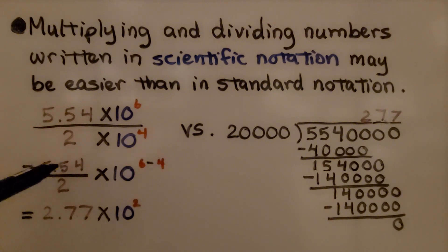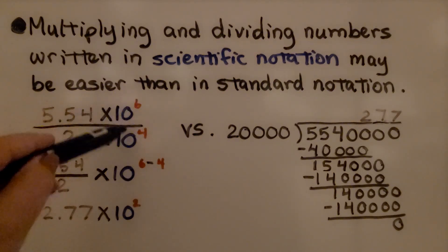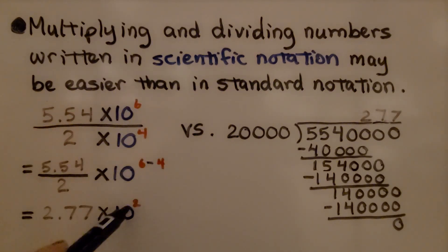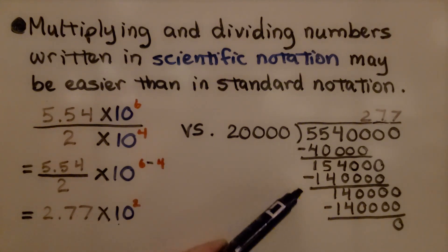We just do 5.54 divided by 2 and we get 2.77. And for these exponents, since we have a like base, we just subtract, we get 10 to the 2nd power. Whereas if we did it in long division, this has a lot of zeros and it would take us a little bit longer.